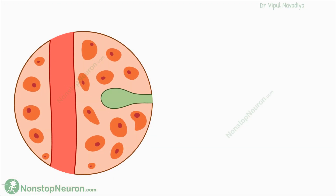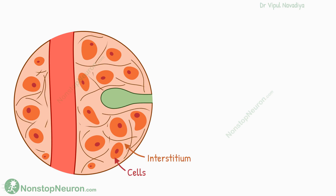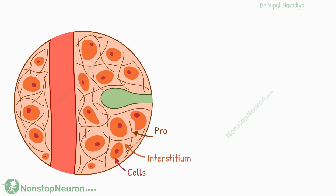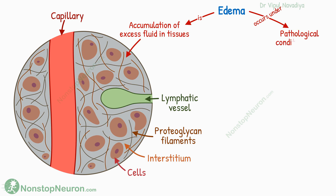Here is a conceptual diagram of a tissue. It has cells, interstitium, proteoglycan filaments in the interstitium, a capillary, and a lymphatic channel. Edema is an accumulation of excess fluid in the body tissues. It occurs in pathological conditions only. Under physiological conditions, it is prevented by the following factors.